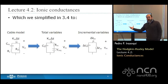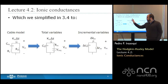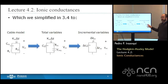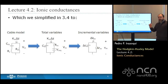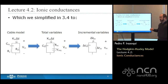We also move from total variables describing the entire membrane to incremental variables — capacitance per unit length and resistance per unit length — multiplied times the length of the unit, delta Z. So we have membrane current per unit length, capacitance per unit length, resistance per unit length, and the membrane voltage locally across that length.